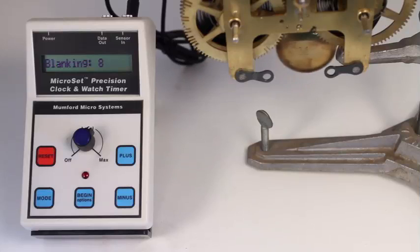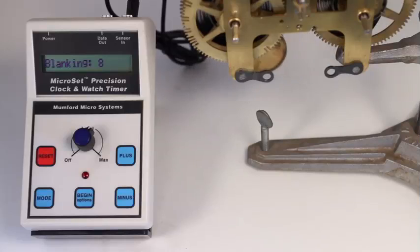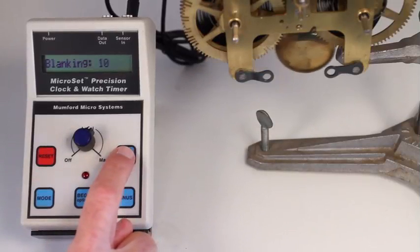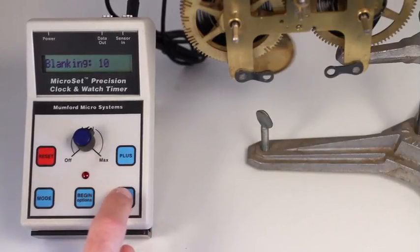The number is the relative size of the blanking window. This is the relative amount of time microset will not listen after each beat. To increase the setting, press the plus button. To decrease the setting, press the minus button.